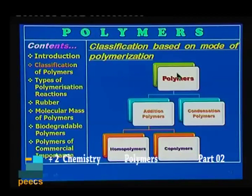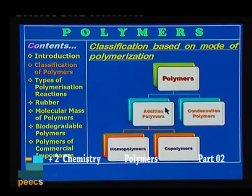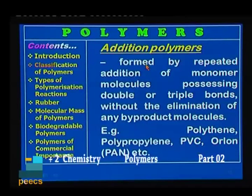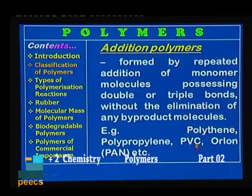Next is classification based on mode of polymerization — how the polymerization process occurs. Based on this, we can classify polymers into two broad categories: addition polymers and condensation polymers. Addition polymers can be further classified into homopolymers and copolymers. Addition polymers are formed by repeated addition of monomer molecules possessing double or triple bonds without elimination of any byproduct molecules. Examples are polythene, polypropylene, PVC, Orlon, and PAN (polyacrylonitrile).